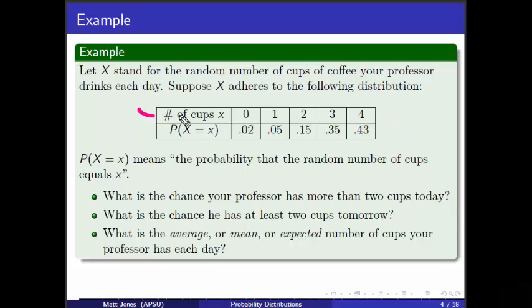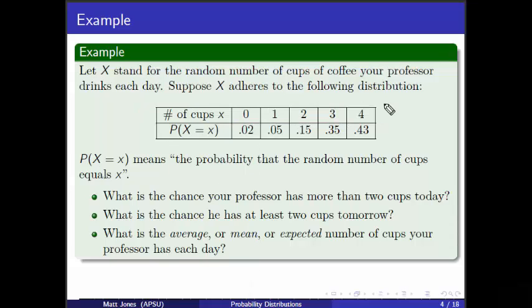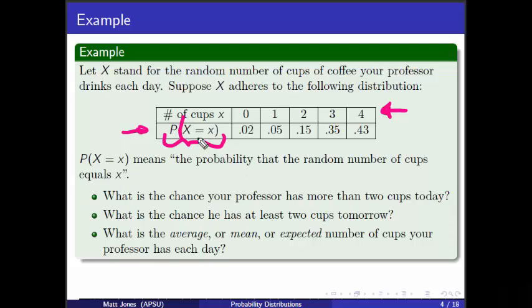In the top row I've got the number of cups — the possible things that can occur. He can have zero, one, two, three, or four. He can't have more than four. The second list gives the probabilities. We have our probability expression P(X = x) — the event that the random number of cups takes on the value of little x, where big X is the random variable and little x cycles through the possible values.